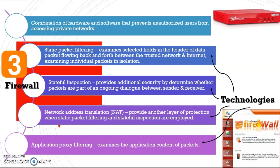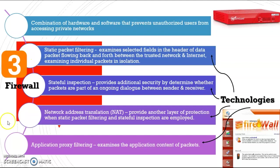Third is network address translation, which provides a layer of protection when static packet filtering and stateful inspection are employed. It translates whether the network address is trustworthy enough to proceed with communication. Fourth is application proxy filtering, which examines the application content of packets.